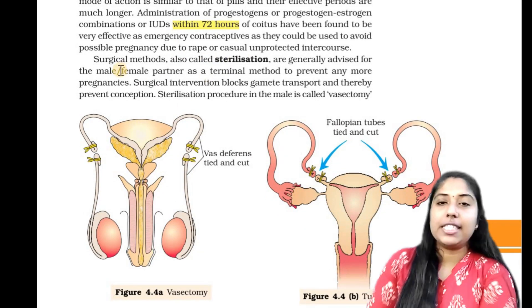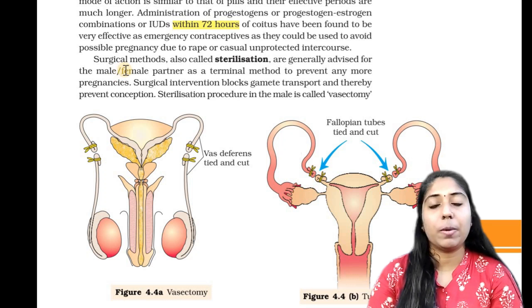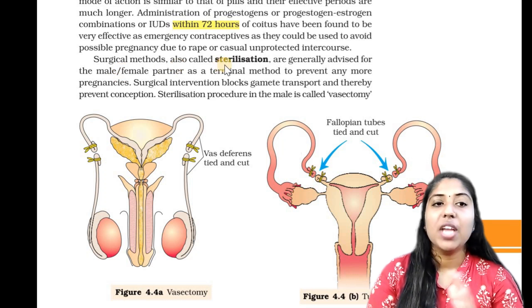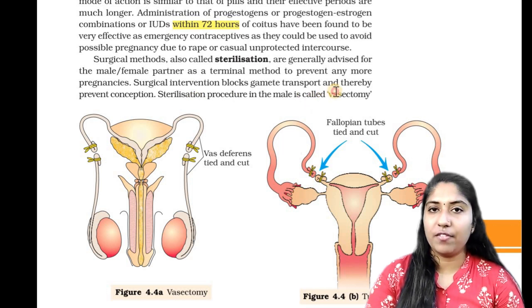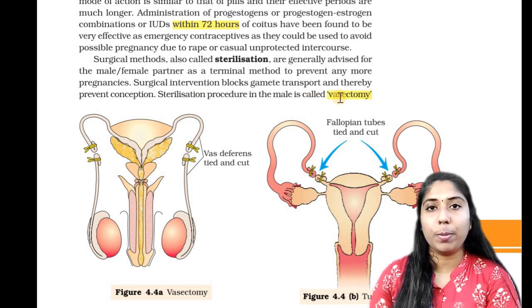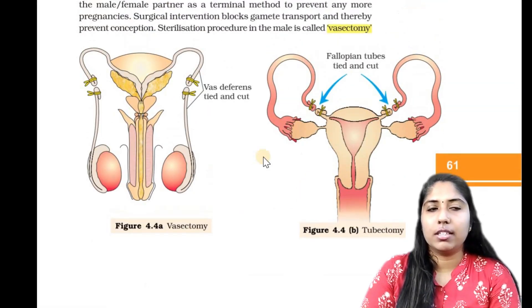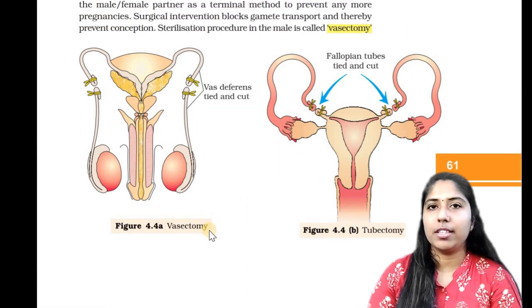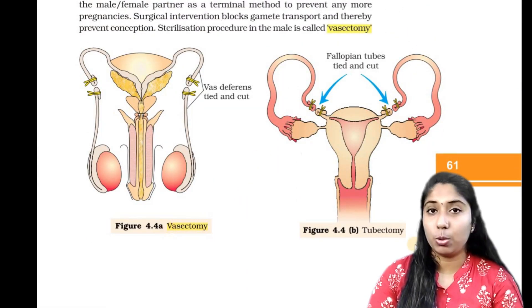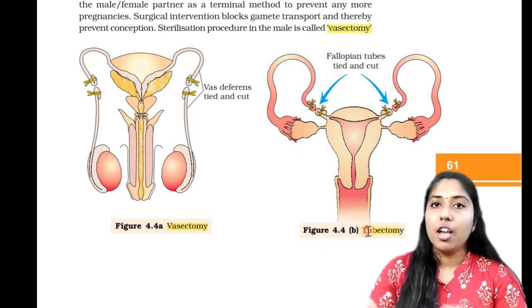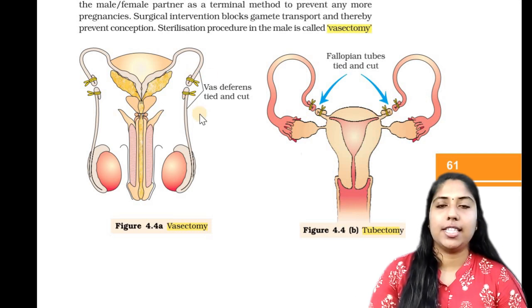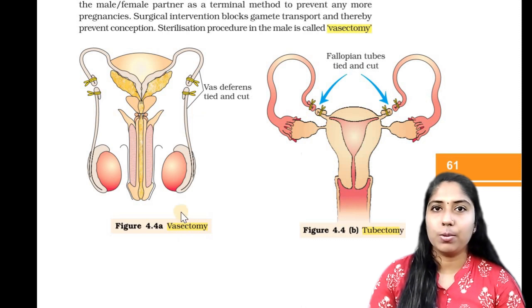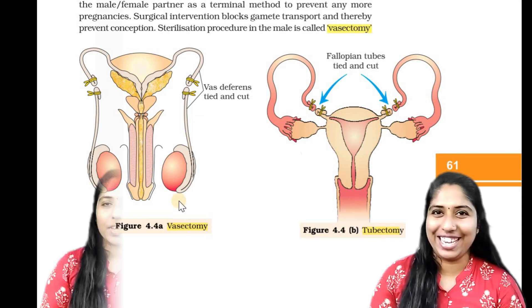The next one is sterilization, which involves surgical methods. Male sterilization is called vasectomy. Female sterilization is called tubectomy. If the female fallopian tube is cut or tied, it is tubectomy. If the male vas deferens is involved, it is vasectomy.